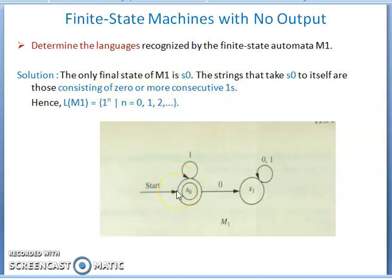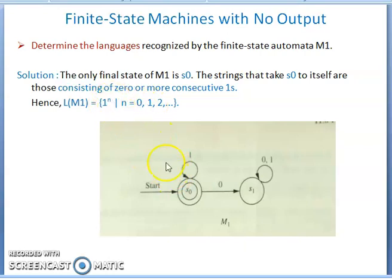For example, if n equals 0, the string is the empty string (lambda) — you remain at s0. If n equals 1, a single '1' keeps you at s0 — that is recognized. If you input '101': starting at s0, on '1' you stay at s0; on '0' you move to s1; on '1' you stay at s1 — you never reach the final state, so 101 is not recognized.